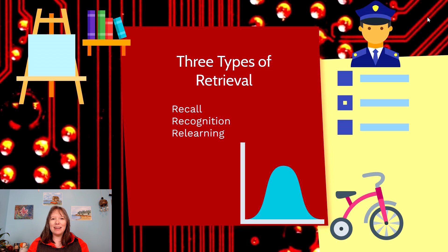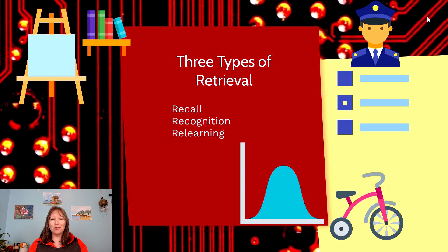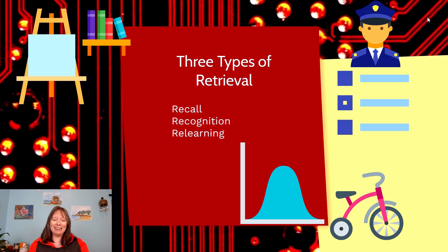Then we have relearning. Relearning is the idea that you haven't been rehearsing something, but in a new situation can you put it together? Can you remember how to ride a bike even though it's been decades? Can you remember how to apply a statistics formula in a new situation — not recalling the formula, not recognizing the answer in multiple choice, but if we give you the formula, can you use it? Recognition tends to be the easiest, recall tends to be the hardest, with relearning somewhere in the middle in terms of cognitive load.